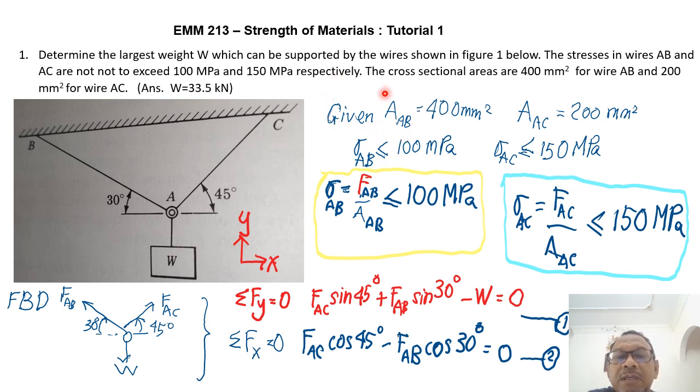And we'll just get what are the data given in the questions. So given that the area of AB equals to 400 mm square, so I wrote here AAB, area of AB equals to 400 mm square, and I wrote here AAC equals to 200 mm square. So I know that sigma AB cannot exceed 100 MPa, as given here. And I know that AC cannot exceed 150 MPa. So I can now combine these two.